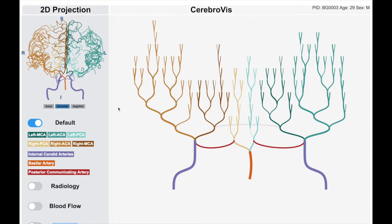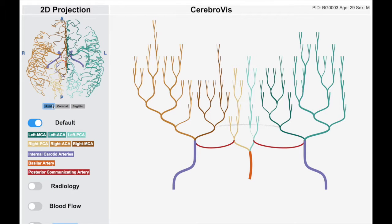For context, Cerebral Vis shows a 2D projection of the 3D isosurface brain visualization. The 2D projections can be viewed from different planes.